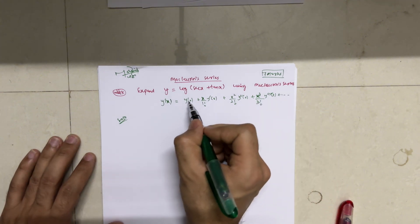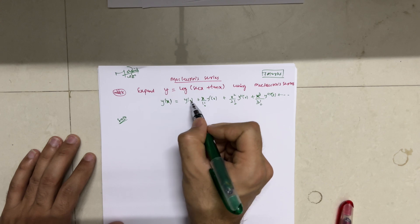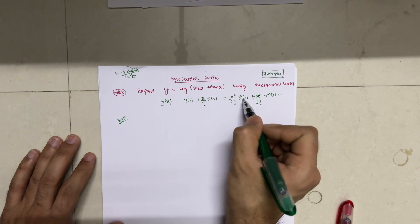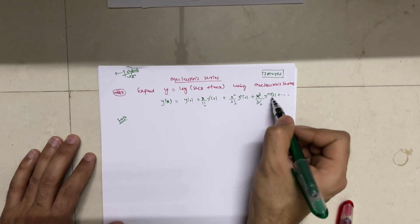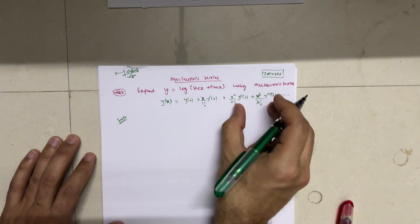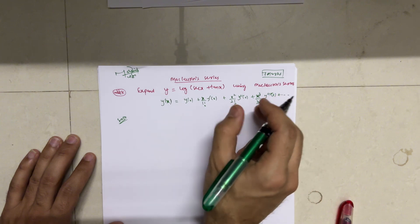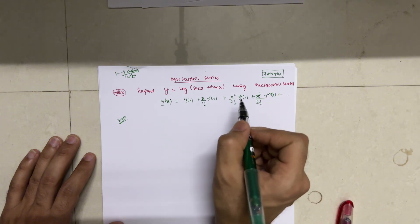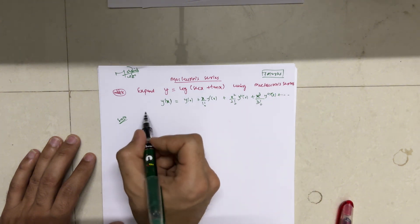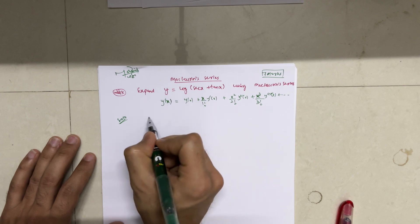What we have to determine: y(0) first, then y'(0), then y''(0), then y'''(0). Once we get these values, we put them in the Maclaurin series to get the required expansion. Now let's proceed.